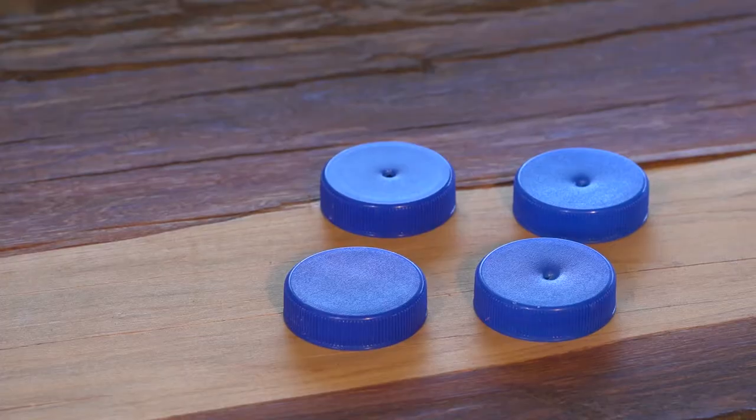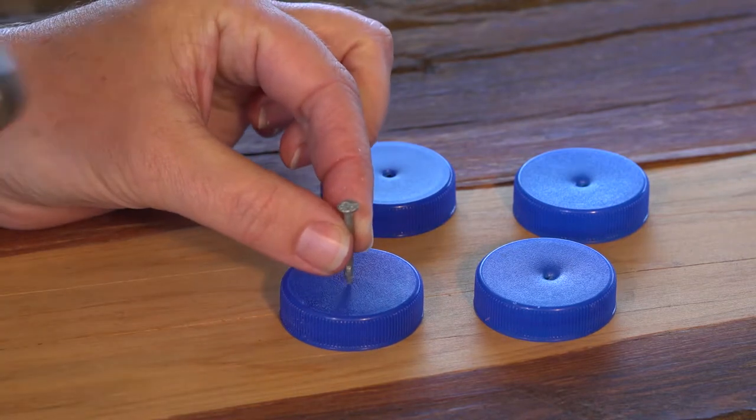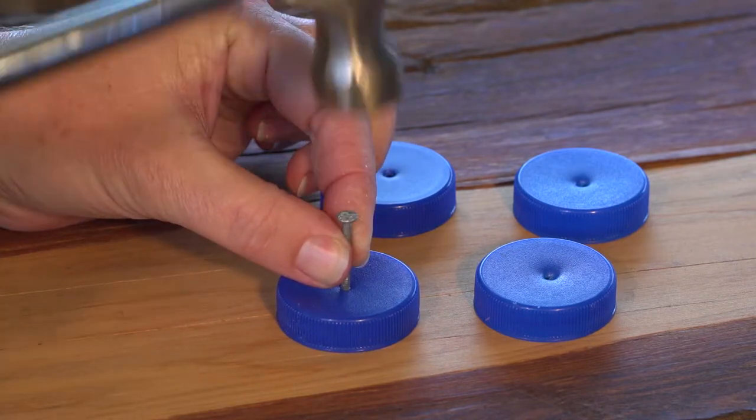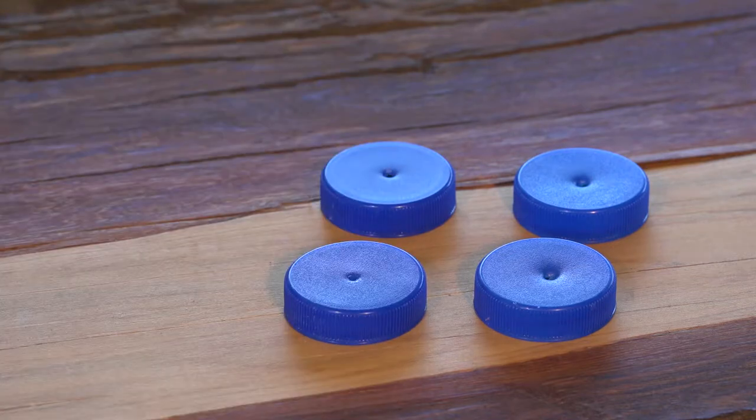We'll begin with the wheels. Ask an adult to use the hammer to nail small holes through the middle of each milk cap.